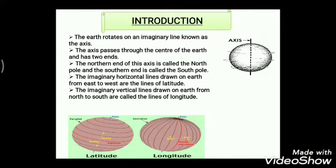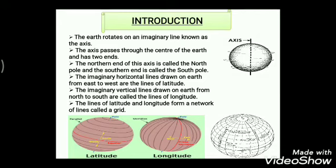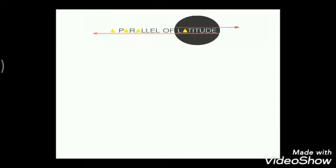When latitudes and longitudes come together, the lines of latitude and longitude form a network of lines called a grid. Together, these latitudes and longitudes help us to locate places on a map accurately.